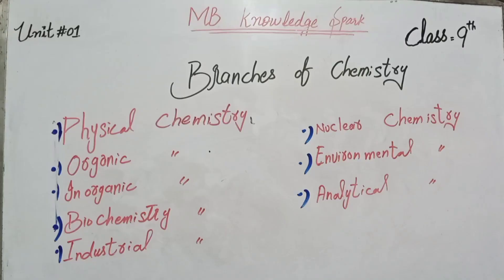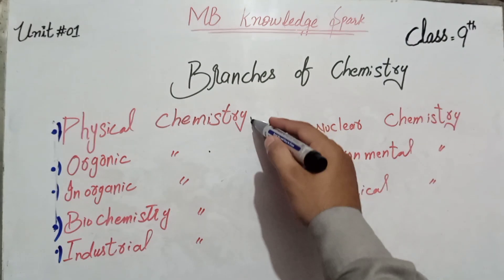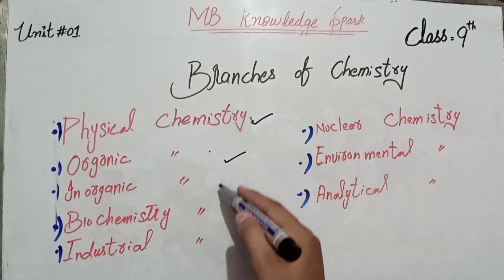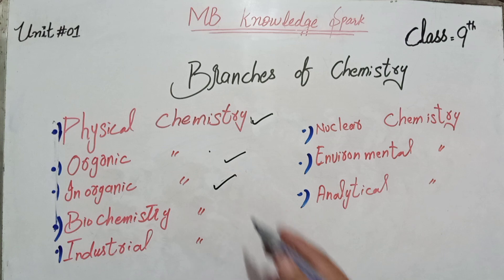Branches of chemistry. There are mainly eight branches of chemistry. Today we will only discuss physical chemistry, organic chemistry, and inorganic chemistry.